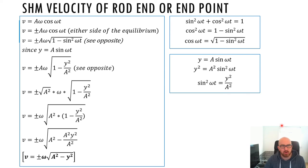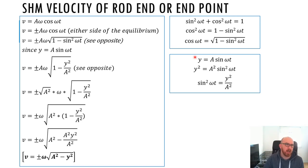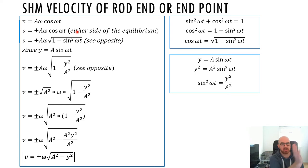Moving on, we're going to talk about a specific example for a rod endpoint or end point of a pendulum. The velocity is Aω cos(ωt), as we got from the first slide. The velocity can be either side of the equilibrium — it could be positive or negative depending on where the object is compared to the equilibrium position.